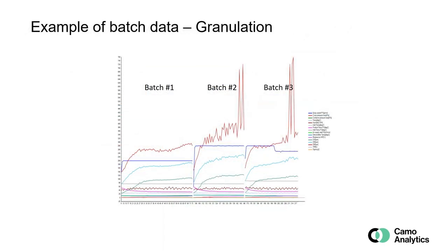Here is a small example where we have some 10 variables for three batches. We see that some are constant, some are changing over the duration of the batch, and some are partially constant. We also see the batches have various lengths.